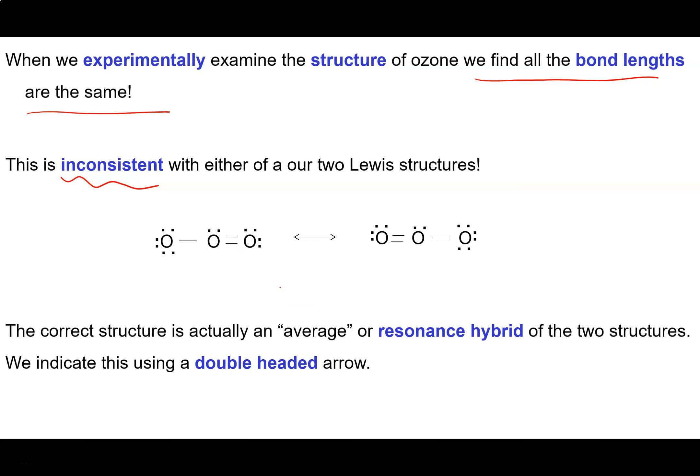What it is, is an average of our two correct equivalent Lewis structures. What we really have in ozone is not one single bond and one double bond. It's a kind of one and a half bond between the outer oxygen atoms on both sides. We indicate this when we have a set of equivalent good Lewis structures by writing out all of the Lewis structures separated by double-headed arrows. Sometimes there's three or four of them. The true structure is what we call a resonance hybrid of all of the correct equivalent Lewis structures, and it actually exists as an average of all of them.